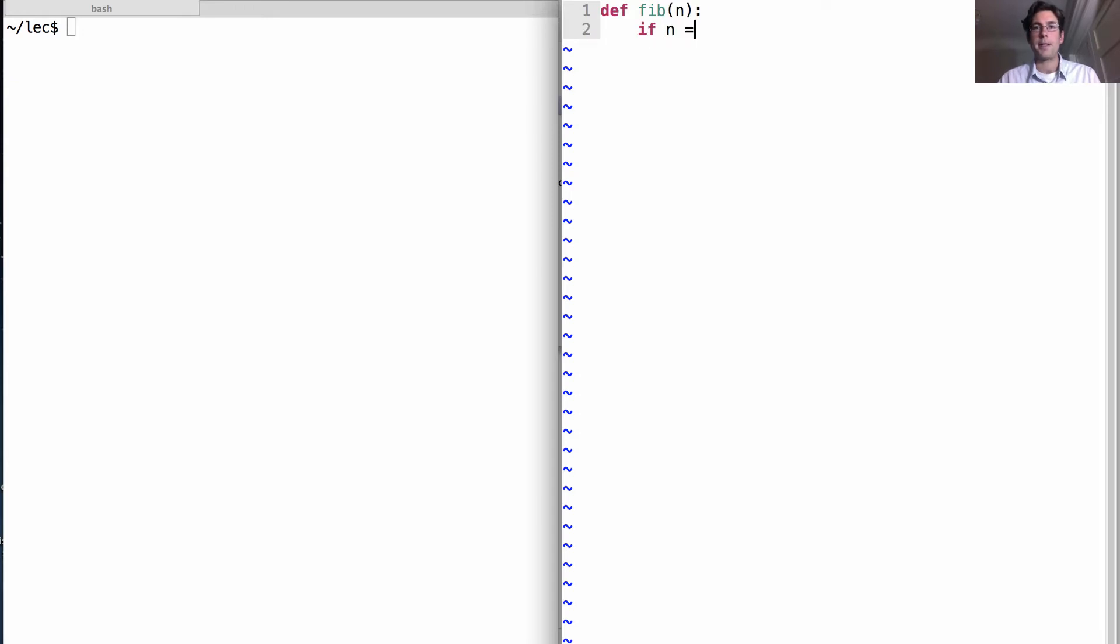So the base case was n being equal to 1, then we return the first Fibonacci number. If n is 2, we return the second. Otherwise, we return previous two summed together.